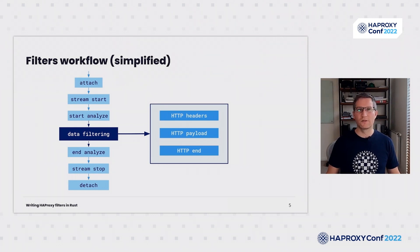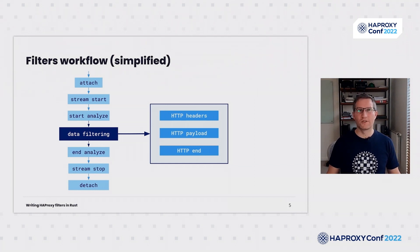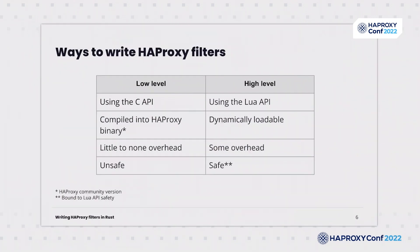For HTTP streams, HAProxy calls an HTTP headers callback just before body forwarding and after any processing on the request or response HTTP headers. This callback is always called for HTTP streams when defined, whereas payload or body filtering must be registered. In reality, this diagram is more complex and includes front-end and back-end-level filtering steps. Starting from HAPROXY 2.5, there are two ways to write filters. The first one is using the low-level C API, which is the unsafe way, and another one is using the high-level Lua API, the safe way. On the slide, you can see a comparison table of those two ways.